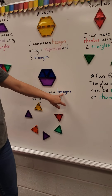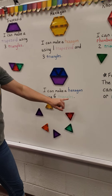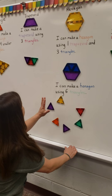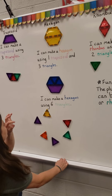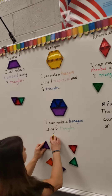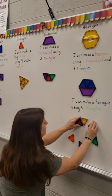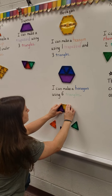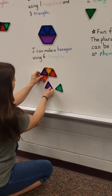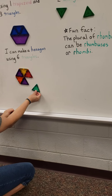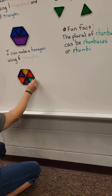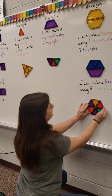Now I can make a hexagon using six triangles. I know that three triangles can make a trapezoid, and two trapezoids can make a hexagon. So I've got to figure out how to make — there's a trapezoid. It's making the hexagon! And now we have a hexagon. That is awesome.